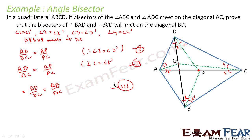Now the question asks us to prove that the bisectors of angle BAD and angle BCD — that is AQ and CQ — meet the diagonal BD. Point Q could lie anywhere, so we assume for contradiction that they are not meeting at the same point Q. Let us assume there are two separate points Q and Q-dash on BD.